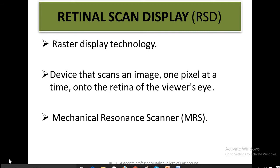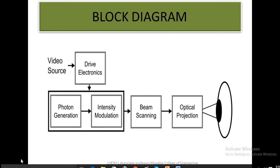Now you will see the block diagram. There are five components: drive electronics, video source, photon generation, intensity modulation, beam scanning, and finally the optical projection system. The video source is fed through photon generation and intensity modulation blocks via drive electronics.